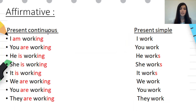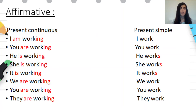Affirmative form — present continuous. In present continuous affirmative form, first we use the subject, then the verb be, and then the main verb with -ing. I am working. You are working. He is working. She is working.